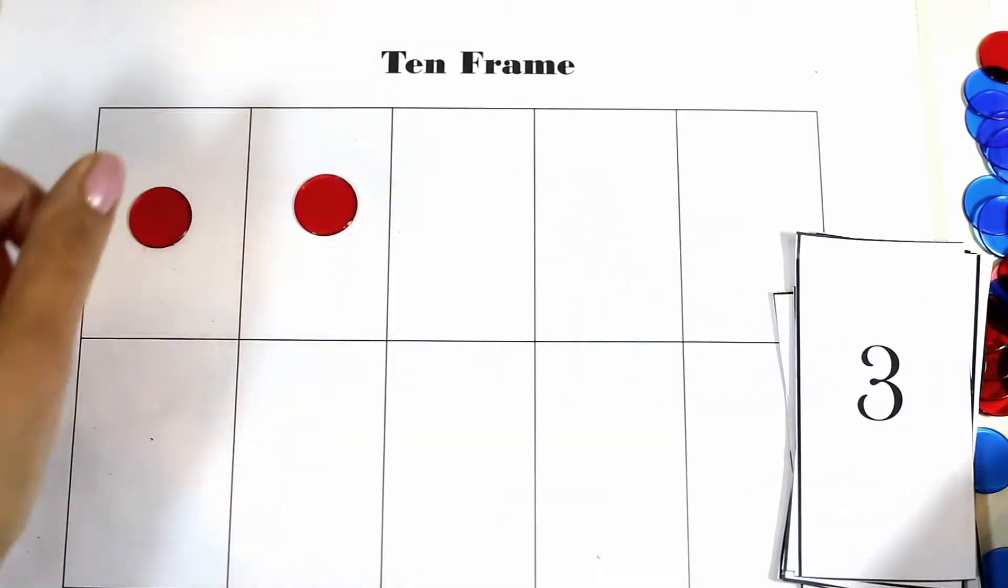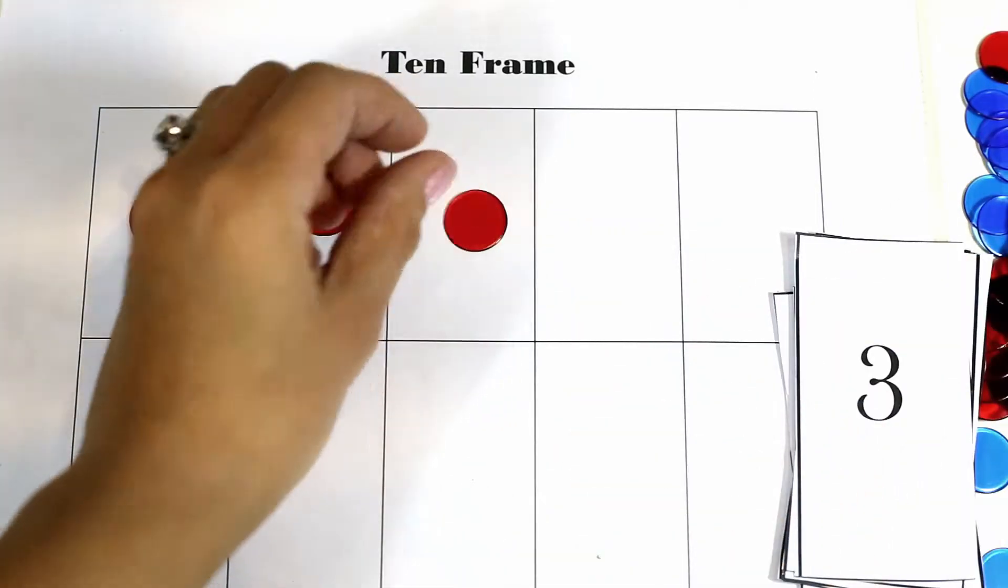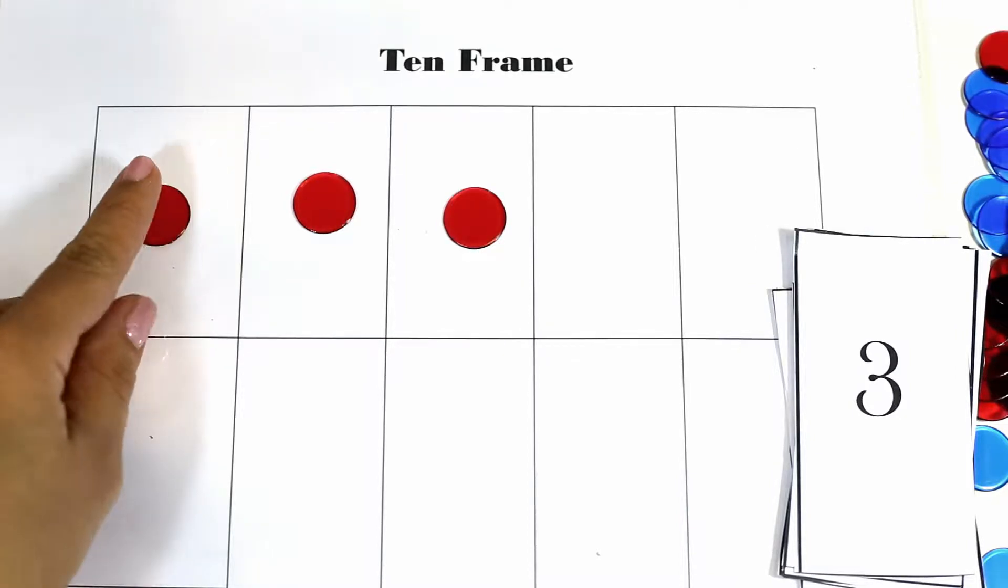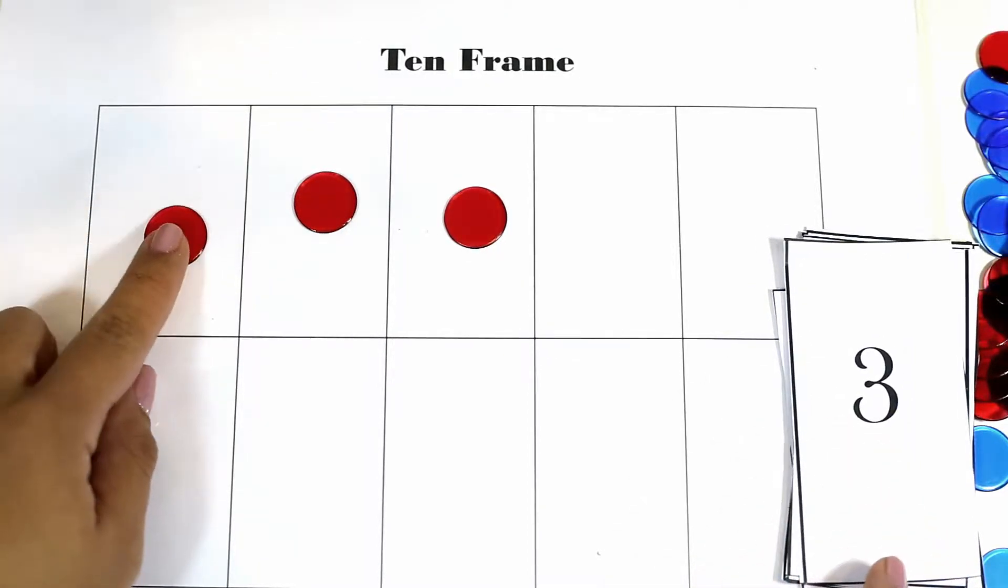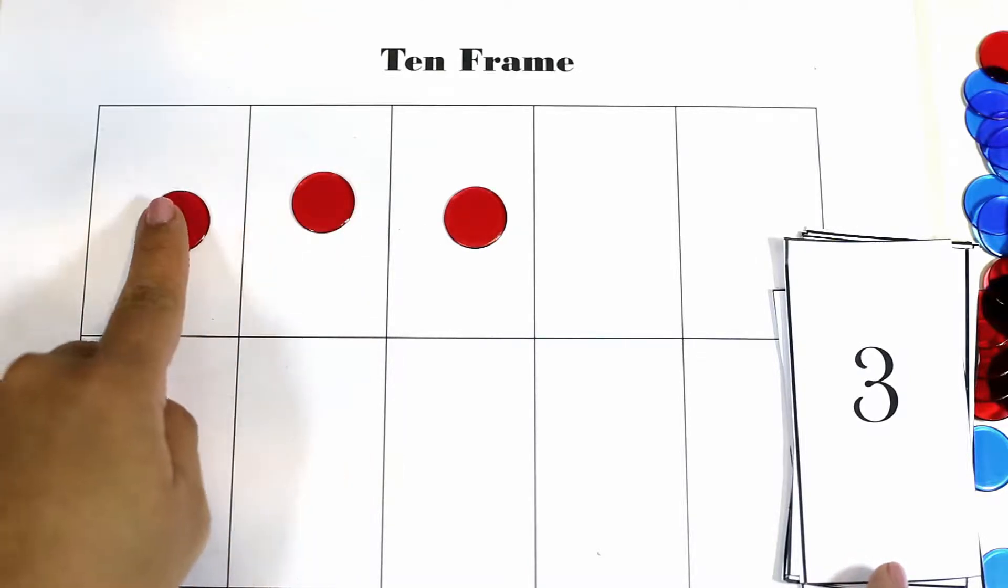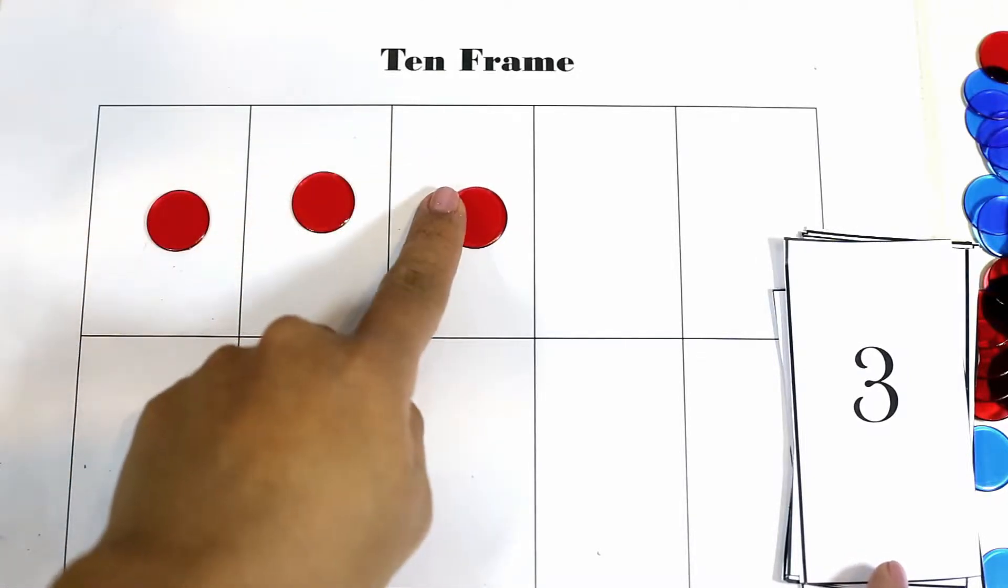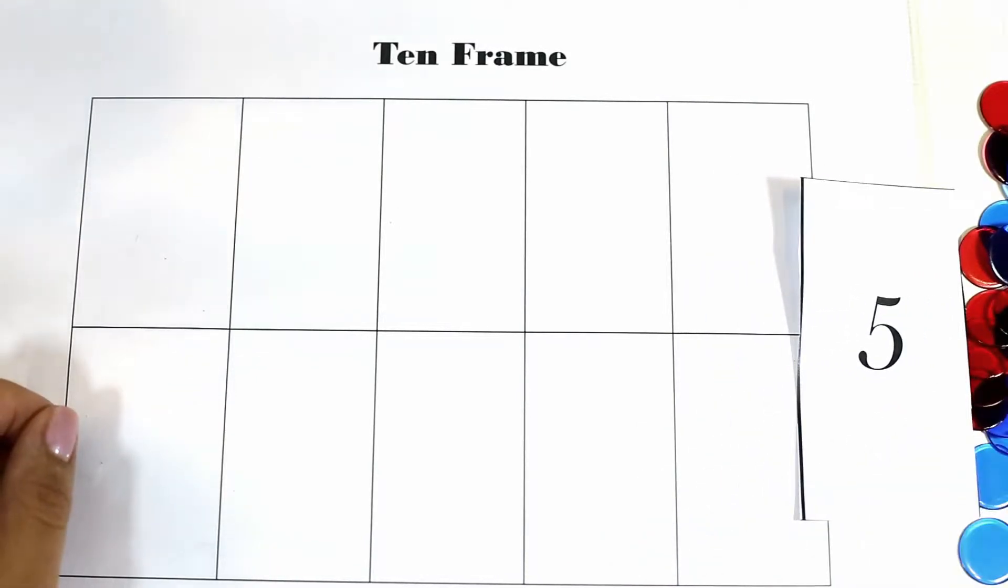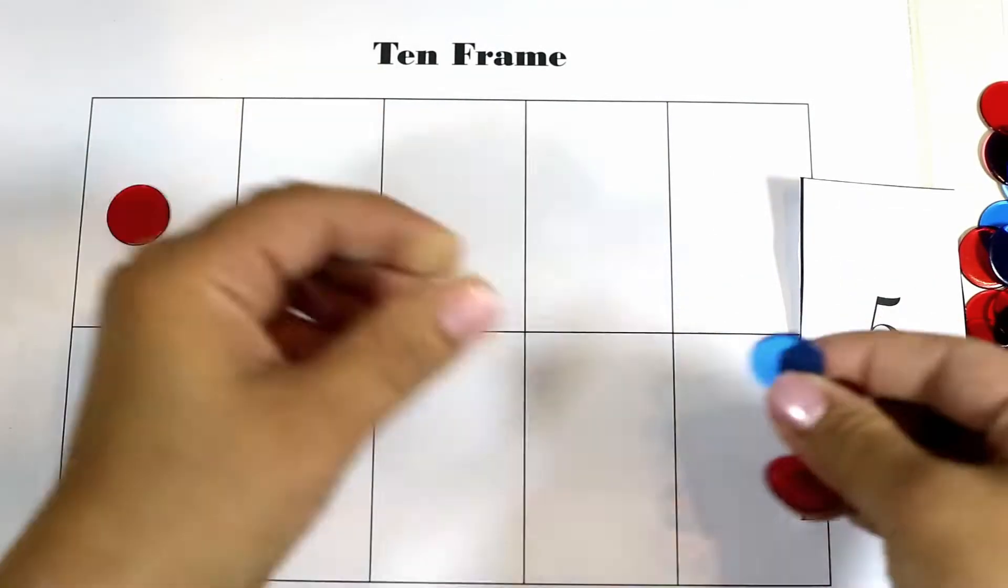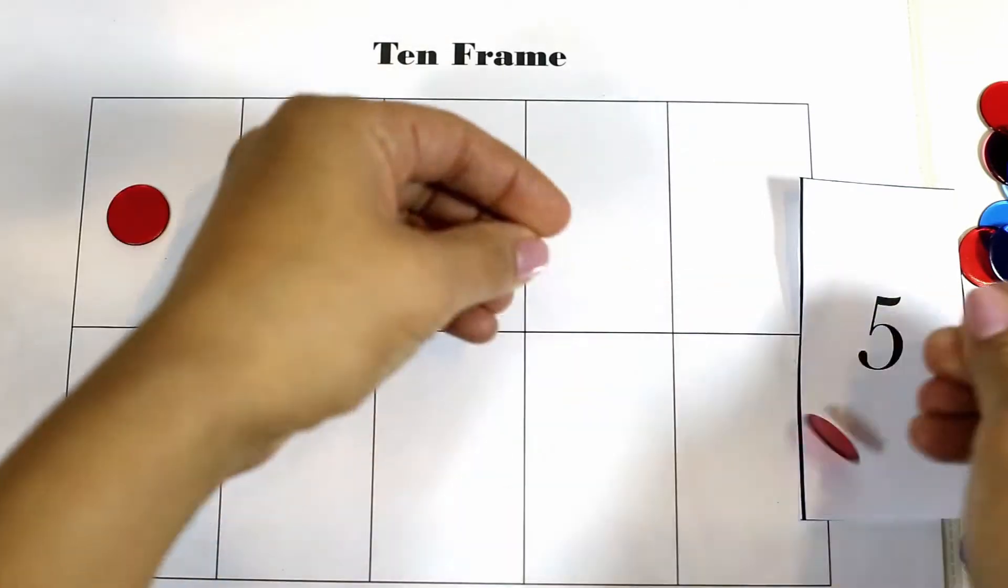This is just one way and by doing this they're learning one-to-one correspondence so they're able to say the number and also count each of these counters: one, two, three.